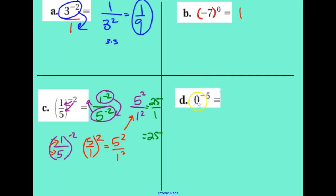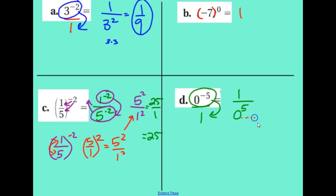Zero to the power of negative five: since it's not a fraction, I make it one. Any negative exponents need to move to the bottom, so I have zero to the positive fifth power in the denominator. But zero times zero times zero times zero is still zero, so we have one divided by zero. You can't do that — this is what we call undefined. Your calculator is going to say error.